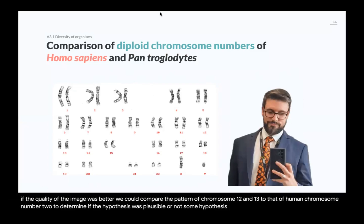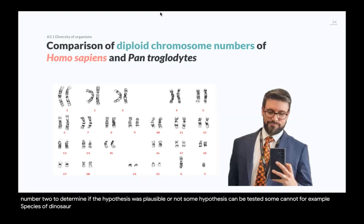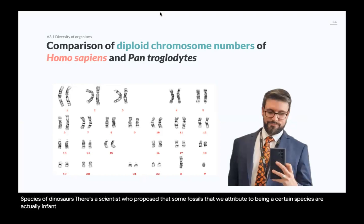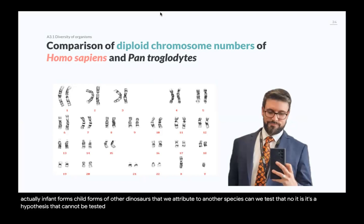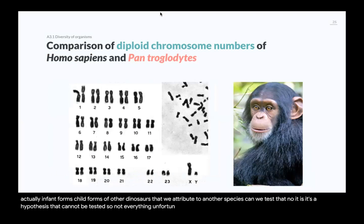Some hypotheses can be tested; some cannot. For example, one scientist proposed that some dinosaur fossils attributed to one species are actually infant forms of dinosaurs attributed to another species. Can we test that? No, we can't — it's a hypothesis that cannot be tested. So unfortunately, not everything can be tested.